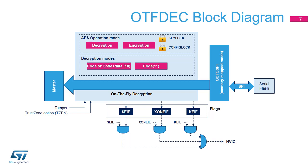The OTF-DEC can also be used for encrypting data using either the standard AES algorithm or the enhanced encryption algorithm. A tamper detection, an RDP regression, or a mode bits change automatically erases the keys. The OTF-DEC can assert an interrupt to the NVIC for three possible causes: security error, key error, and execute-only or execute-while-encryption error. Each of these causes has a dedicated flag and interrupt enable bit.